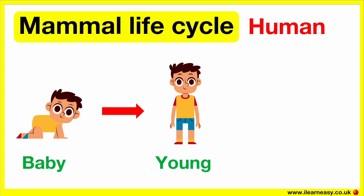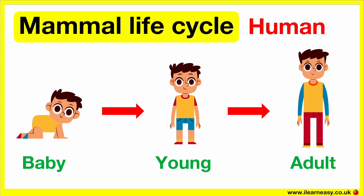When a mammal becomes an adult, it's independent. Therefore, it can look after itself. As an adult, it can reproduce to continue the cycle.